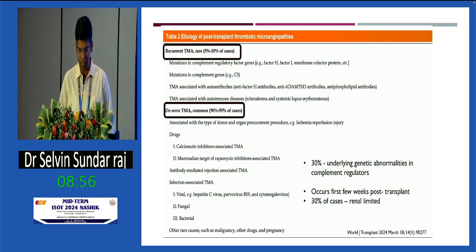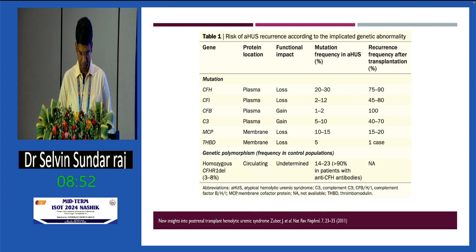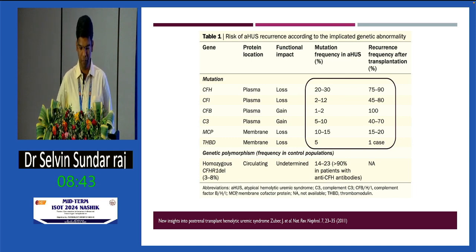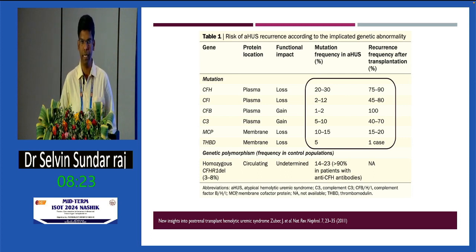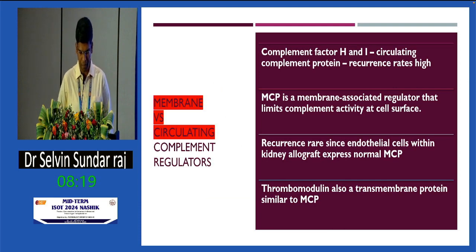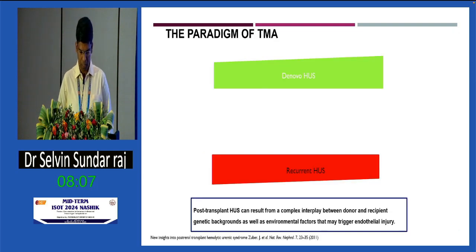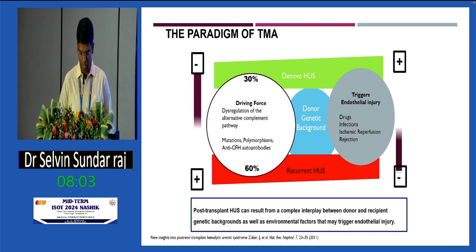De novo TMA occurs mainly in the first two weeks, and 30% of cases can be renal-limited. The most common mutation seen in recurrent TMA is complement factor H. An important point is that circulatory complement regulators carry a high risk of recurrence — complement factor H up to 90%, complement factor I up to 80% — whereas membrane-bound complement regulators have a lesser risk of recurrence. This helps us prognosticate the patient and treat accordingly, as recurrence is rare with membrane-bound mutations because the endothelial cells within the graft express normal membrane cofactor protein.